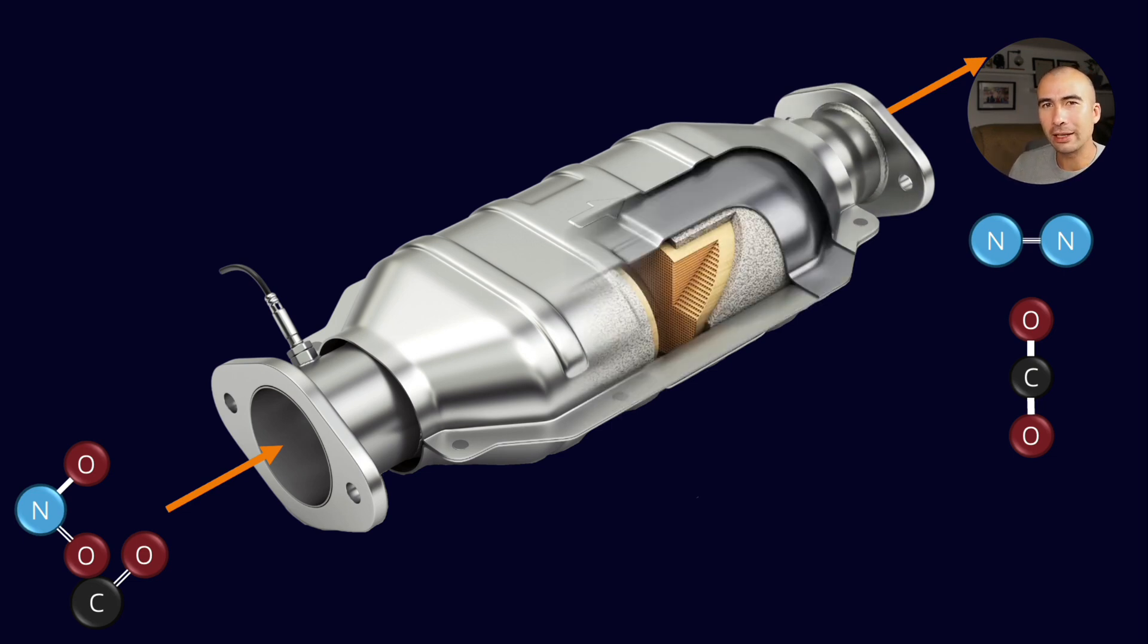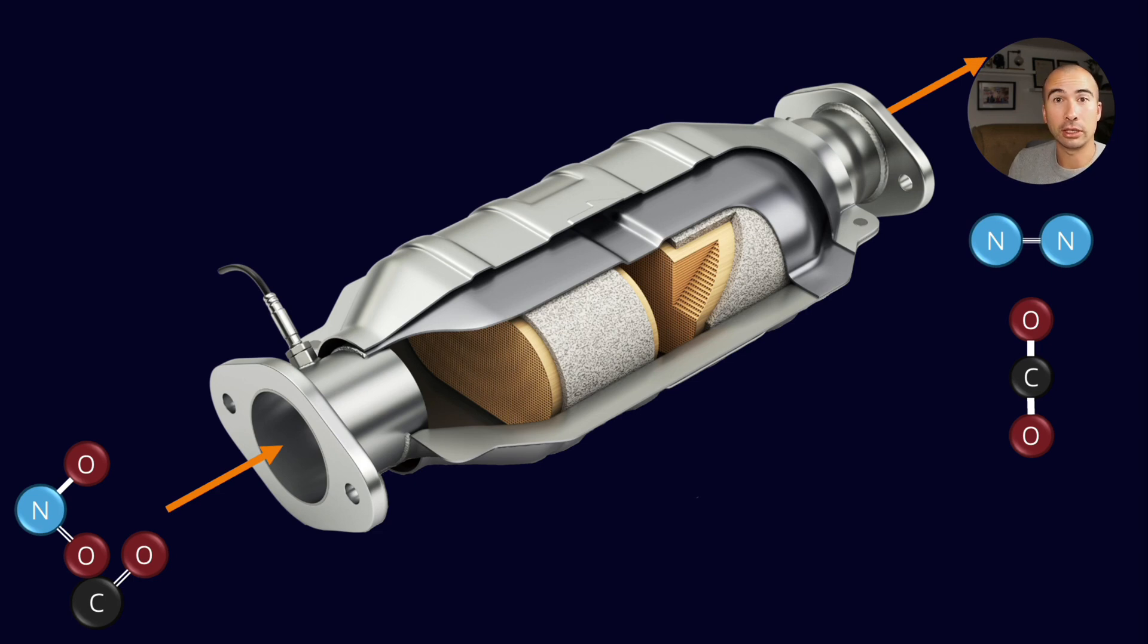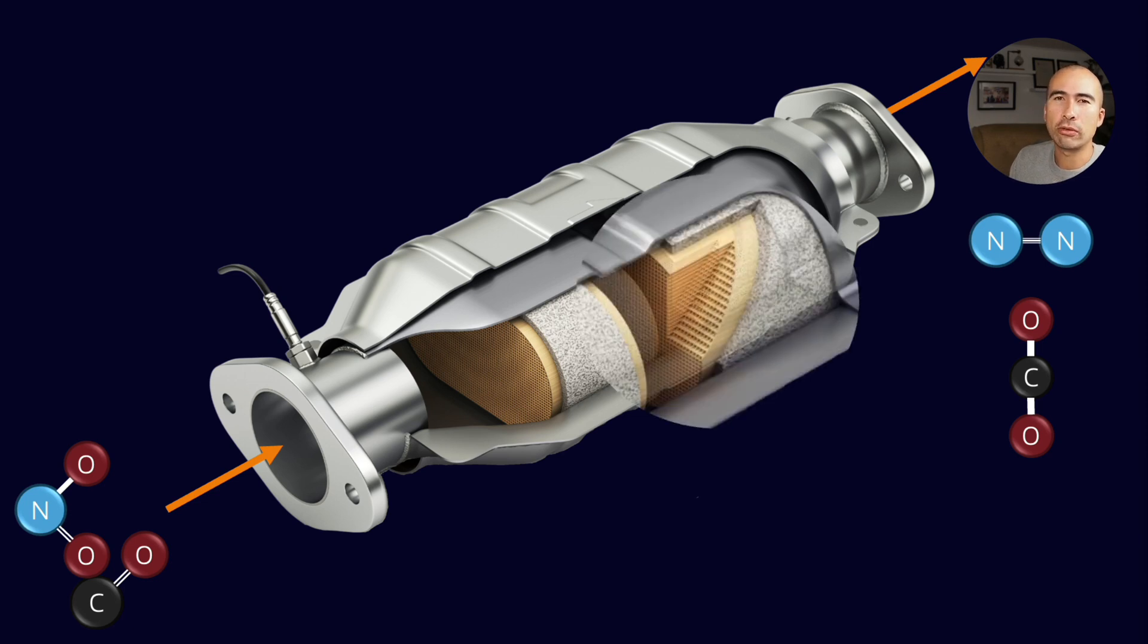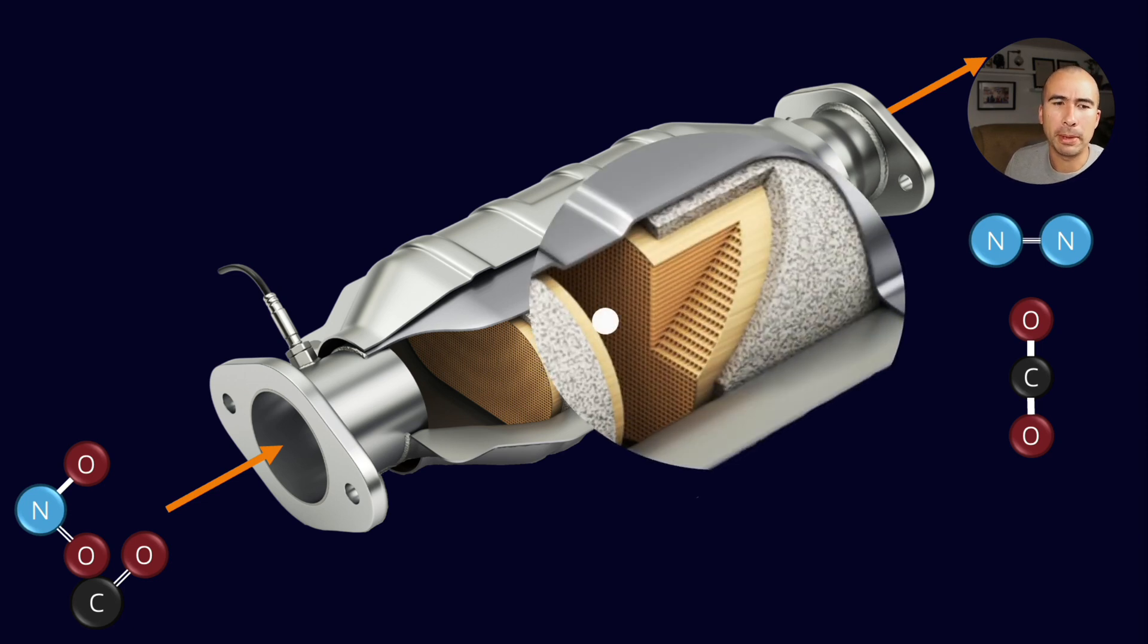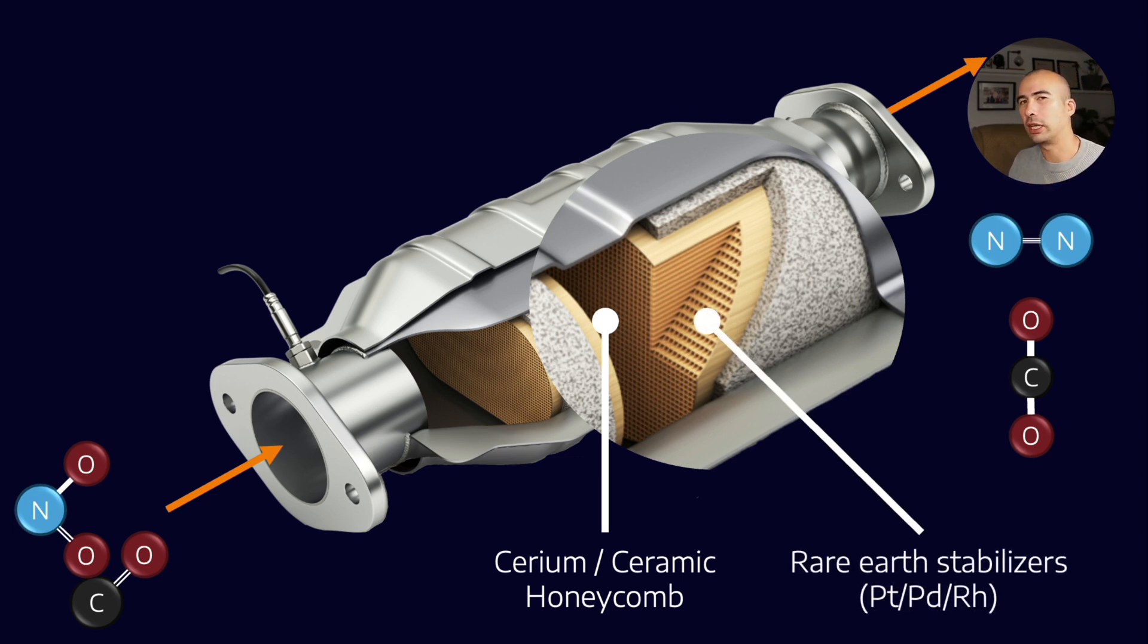Now, if you peel back the layers on a catalyst, and I'm no expert on catalyst production or performance, but generally they all follow a roughly similar pattern. You have this cerium ceramic honeycomb, which is impregnated with rare earth stabilizers, things like platinum, palladium, and rhodium.